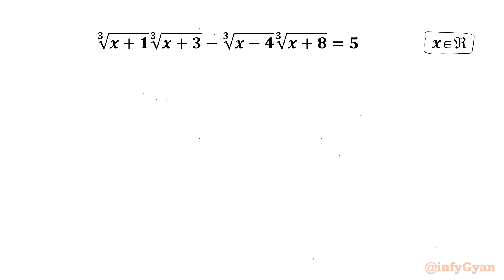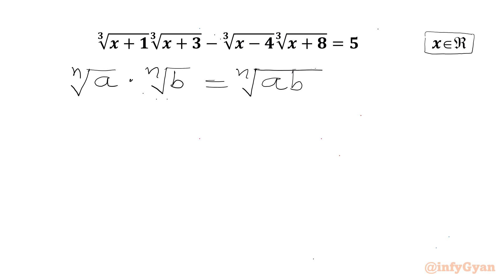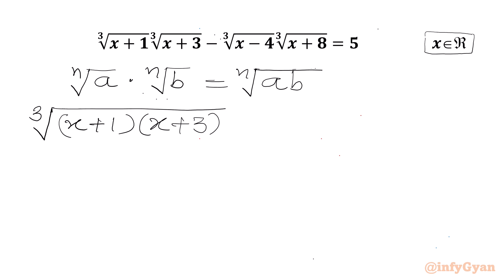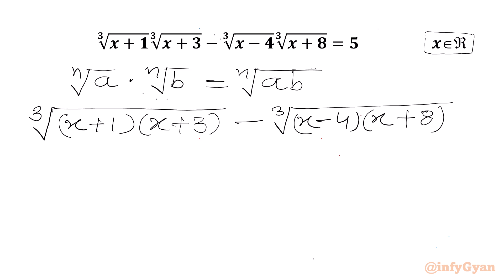Let's get started by writing one property from radicals: nth root of a times nth root of b equals nth root of a times b. Let's apply this property. Here we will get cube root of (x+1)(x+3) minus cube root of (x-4)(x+8) equal to 5.